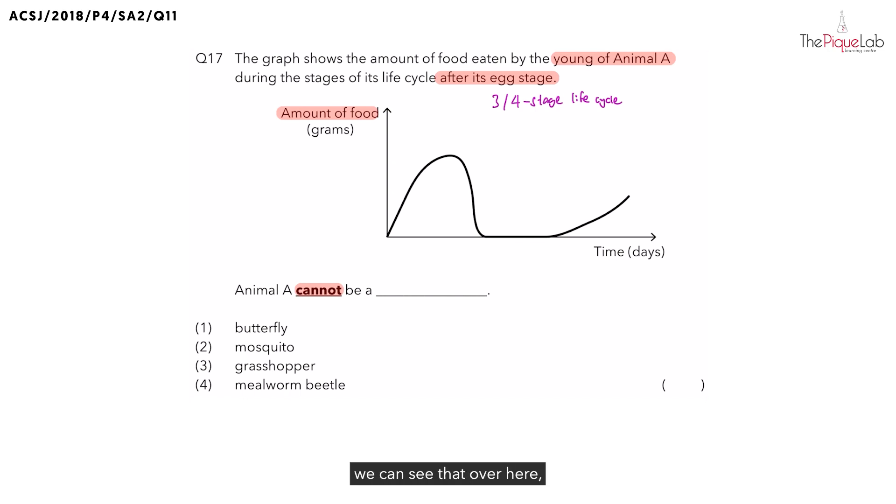Now, in the first part of the graph, we can see that over here there is some food that is being eaten. But afterwards, what do we notice happens to the amount of food? We can see that the amount of food eaten decreases, and it decreases until at this point, is there any food eaten? No. So let's write that down. We know that there is no food eaten by animal A in this stage.